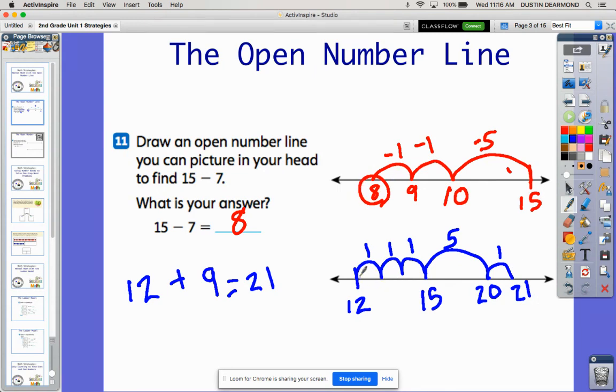Some of us could jump from 12 to 22, which would be 10, but then jump back one because we only need to jump nine. So this is a mental strategy—everyone can do it differently. But that's what's so cool about it, is that you're showing how you use mental math and you're putting it on a number line to share with others.